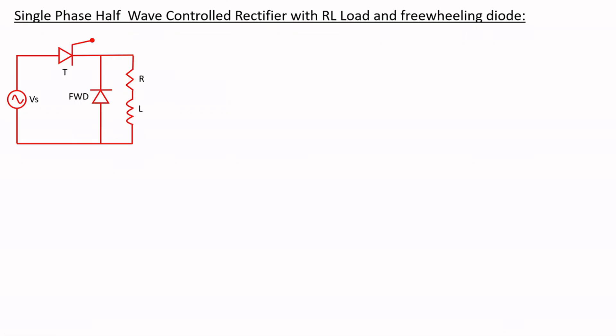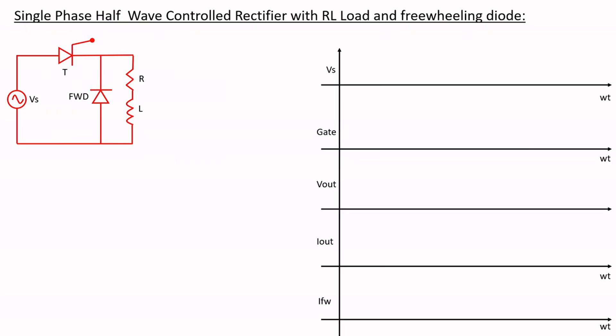This is a circuit diagram. In our previous video, we saw the single phase half wave controlled rectifier with RL load alone. In this video, we have to focus on what is the impact of the freewheeling diode and how it plays an important role in improving the performance of the circuit. We're going to look at the complete operation of the circuit along with the waveforms and also some analysis such as deriving the output voltage expression in terms of average and RMS values.